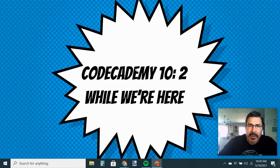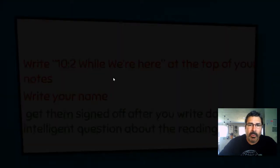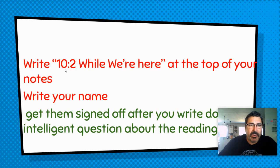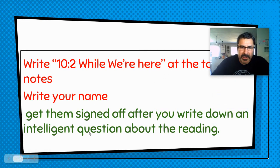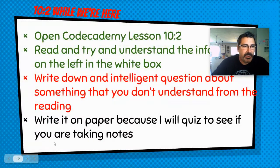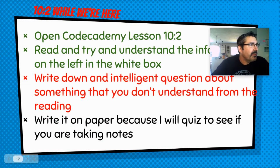Ladies and gentlemen, we're going to do Code Academy Lesson 10 Part 2. We're going to work with while loops. Get out your notes, write 10-2 at the top of your notes, write your name, and I'll sign them off after you write down an intelligent question. Make sure you do this part where you write the intelligent question.